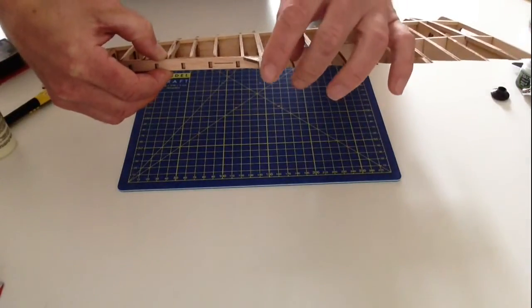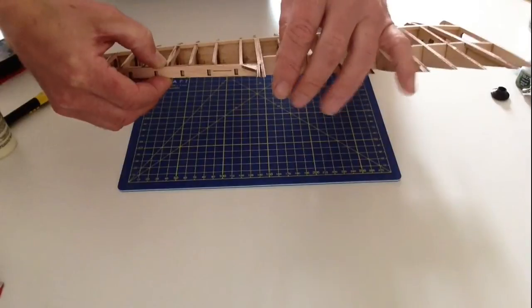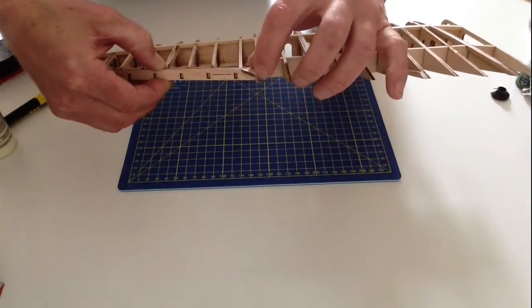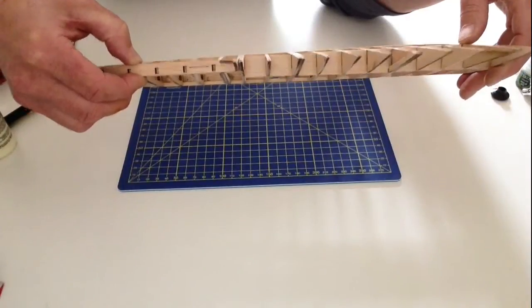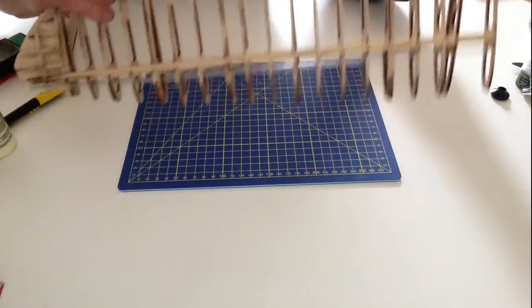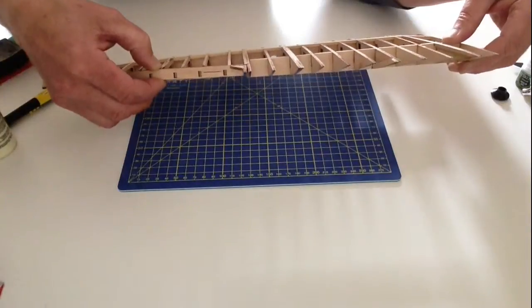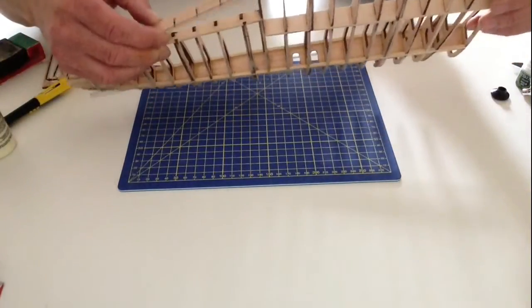Make sure that the actual bottom is in line with the bottom of the wing. Once you've done that, just place that aside and allow that to dry.